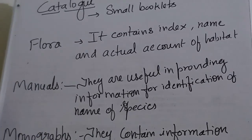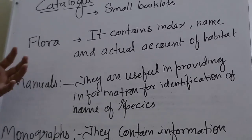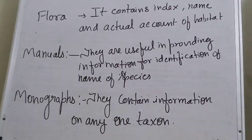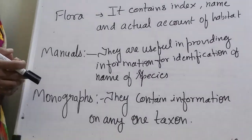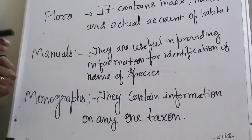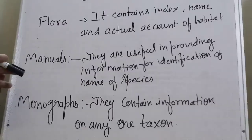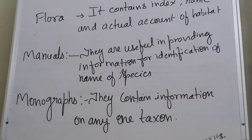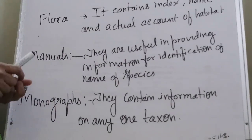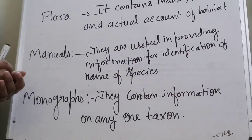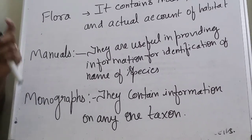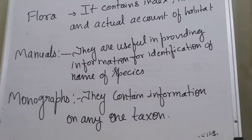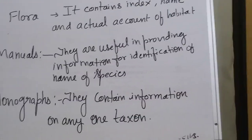Manual — you passed the 10th standard and in 9th and 10th you made a journal, which means a practical book. In a manual, it is like a practical notebook. You will copy some practicals from your practical notebook. So a manual is like that — it is useful in providing information for identification and name of the species. There is a small book-type thing with a brief description of species, and that way we can identify them.